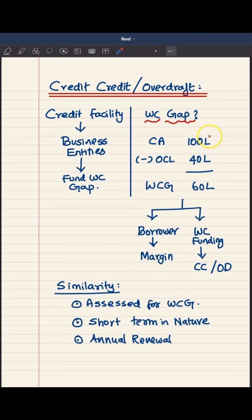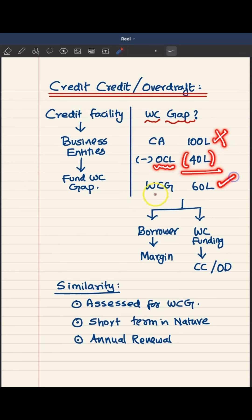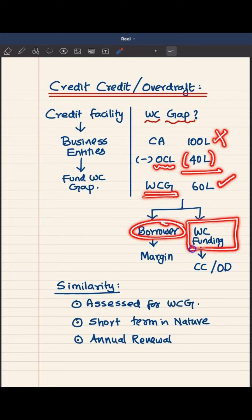Let's say a business entity has current assets of 100 lakhs, and those current assets are already funded by other current liabilities to the extent of 40 lakhs. It means there is a gap of 60 lakhs that requires funding. That gap is what we call the working capital gap, and this gap can be funded by borrowers.